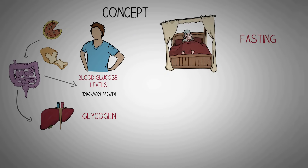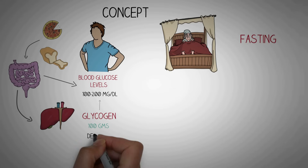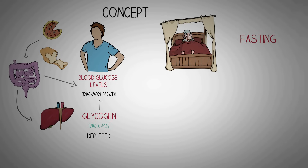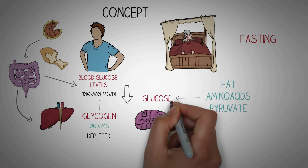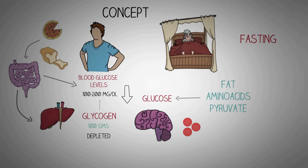Under a fasting state, blood glucose levels start falling and the glycogen reserve — about 100 grams — gets converted into glucose to maintain blood glucose levels. But this glycogen reserve soon gets depleted. Some tissues like the nervous tissue and red blood cells can only utilize glucose as a source of energy, so substances like fat, amino acids, and pyruvate get converted into glucose by gluconeogenesis.